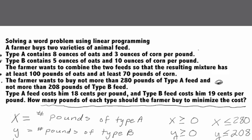Next, we'll set up inequalities using the oats content: there are 8 ounces of oats in type A and 5 ounces in type B. There's a tricky part — the oats are in ounces but we want at least 100 pounds in the final mixture. We can't just add ounces and expect pounds, so we'll convert 100 pounds to ounces, which gives us 1600 ounces.